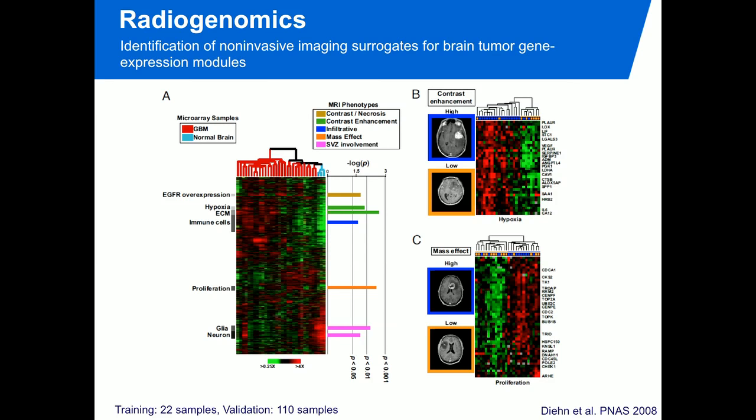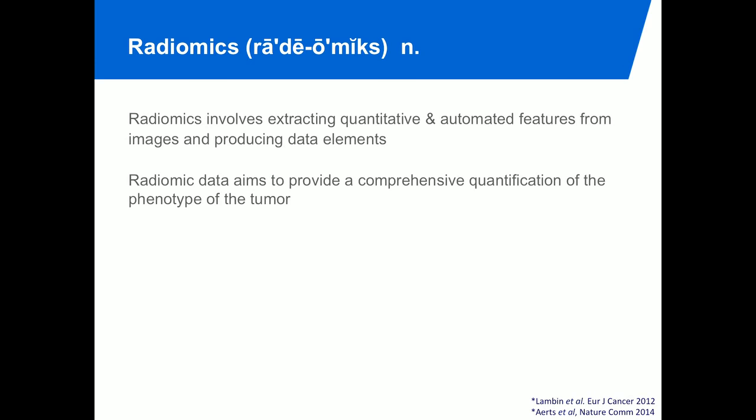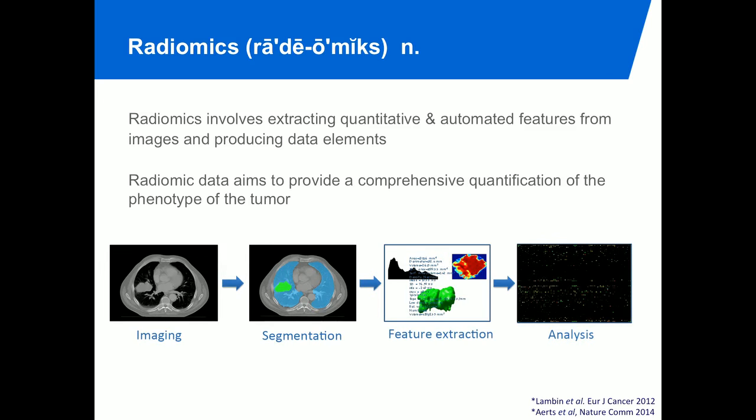Building on this, several years ago we started going into radiomics. Radiomics involves the extraction of quantitative and automated features from images, producing useful data elements — turning a 3D imaging cube into useful data. We aim to provide as comprehensive as possible a quantification of the tumor's phenotype, with a large number of imaging features and a lot of redundancies, but trying to be as comprehensive as possible.